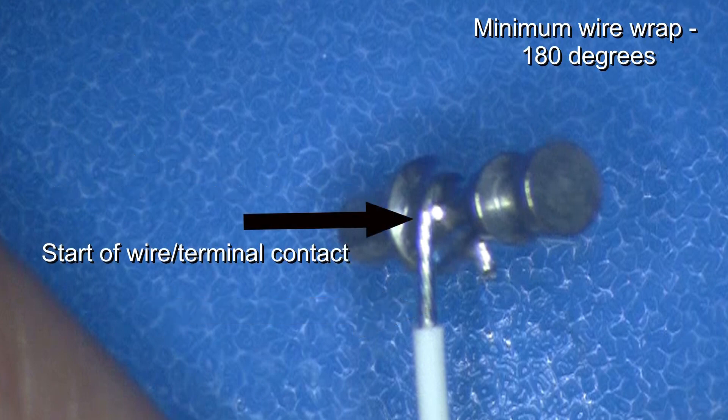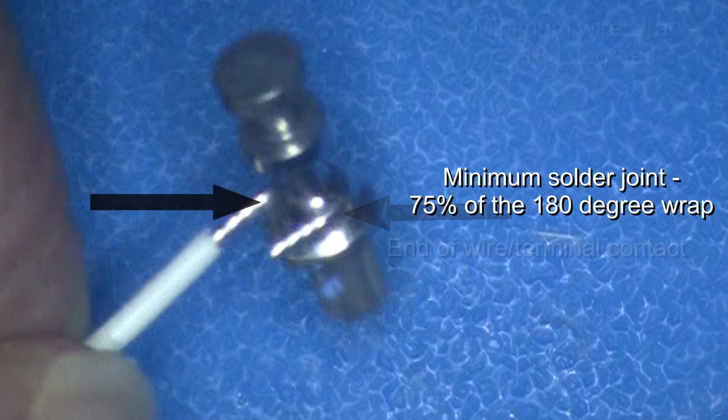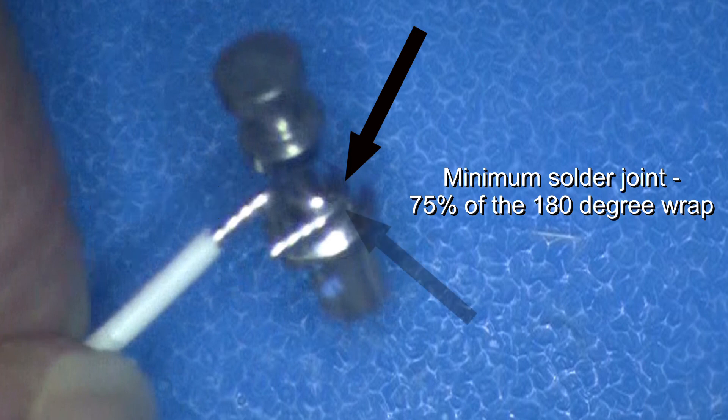The wire must wrap a minimum of 180 degrees around the terminal. 75% of that 180 degree wrap must be soldered to the terminal.